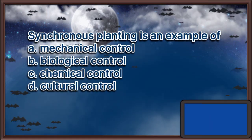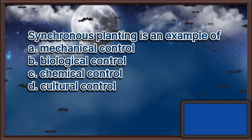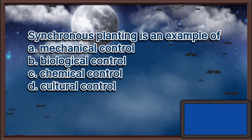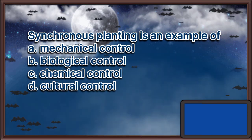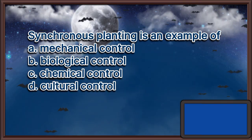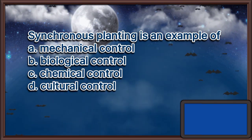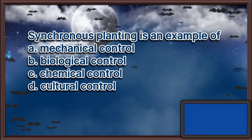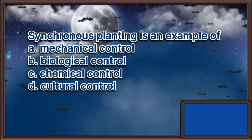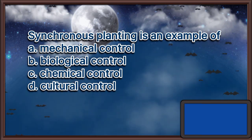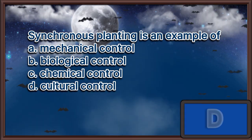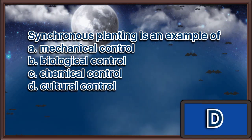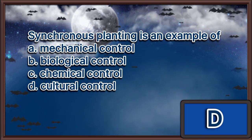Synchronous planting is an example of: A. Mechanical control, B. Biological control, C. Chemical control, D. Cultural control. The answer is letter D.